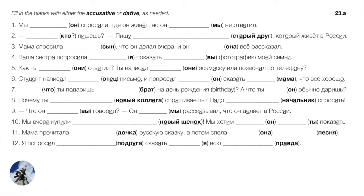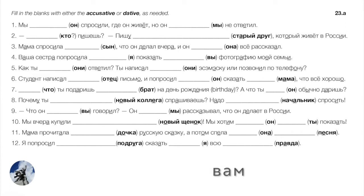Number four: your sister asked me to show you a photograph of my family. The first verb — she requested — takes accusative: Ваша сестра попросила меня показать. To show something to someone in Russian, we get the dative — that'll be вам. Показать вам фотографию моей семьи — the photograph of my family, which is genitive.